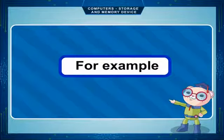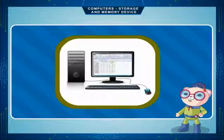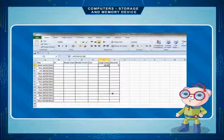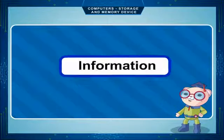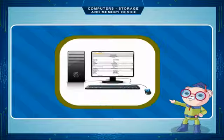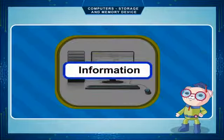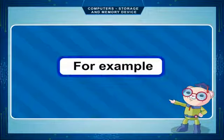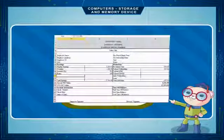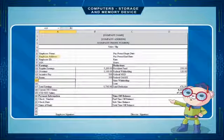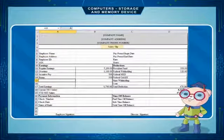For example, details of employees and hours worked by them are data. Information is what you get when data is organized in a useful way. For example, the address of employees, their pay slips, and so on.